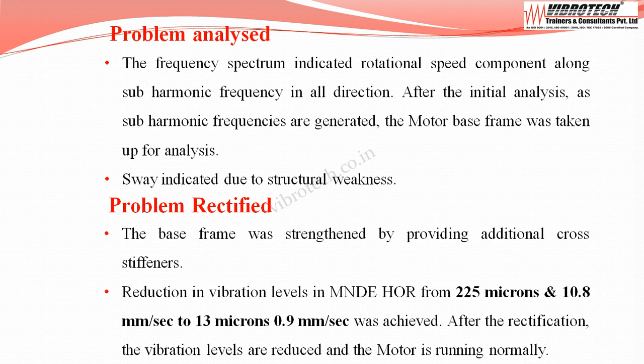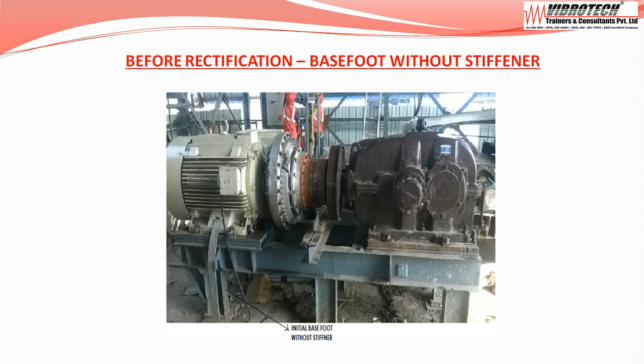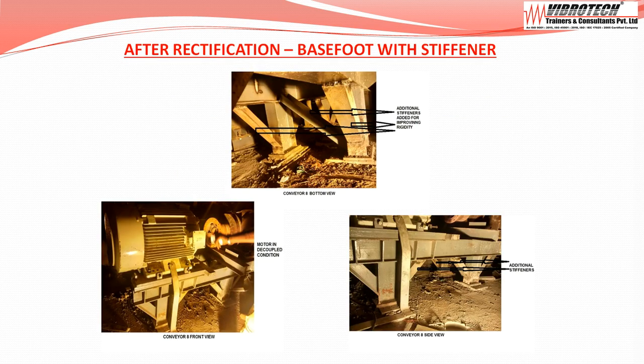Sway was indicated due to structural weakness. The base frame was strengthened by providing additional cross-stiffeners, achieving a reduction in vibration levels at the motor non-drive end horizontal from 225 microns and 10.8 mm/s to 13 microns and 0.9 mm/s. The pictures show before rectification — base foot without stiffener — and after rectification — base foot with stiffener.